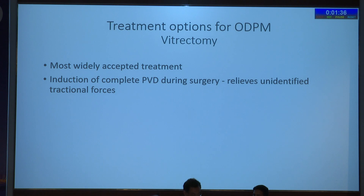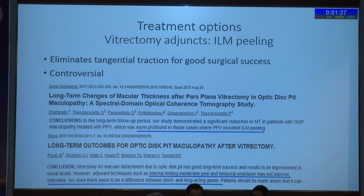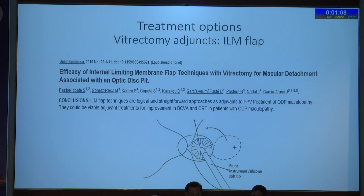Along with vitrectomy, we can go for laser treatment — though this is no longer done — then ILM peeling. Since the fovea is very thin, if you peel the ILM there is every chance of creating a macular hole. Fovea-sparing ILM peeling has been done, but is no longer used as we have other options. One option is plugging — whether it's a macular hole or OD pit, we want to plug it. One plug material is ILM and the other is a scleral plug.